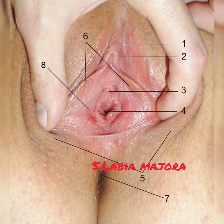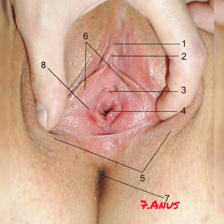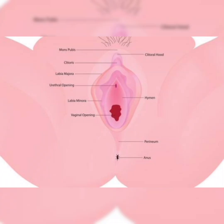First is the vulva, which is the collective term for the external genitalia, often confused with the vagina. Next is the labia majora — the outer large lips that protect the other external organs and contain glands. The labia minora are the inner small lips that surround the vaginal opening and urethra. The clitoris is a sensitive structure comparable to the male penis, located at the meeting point of the labia minora.